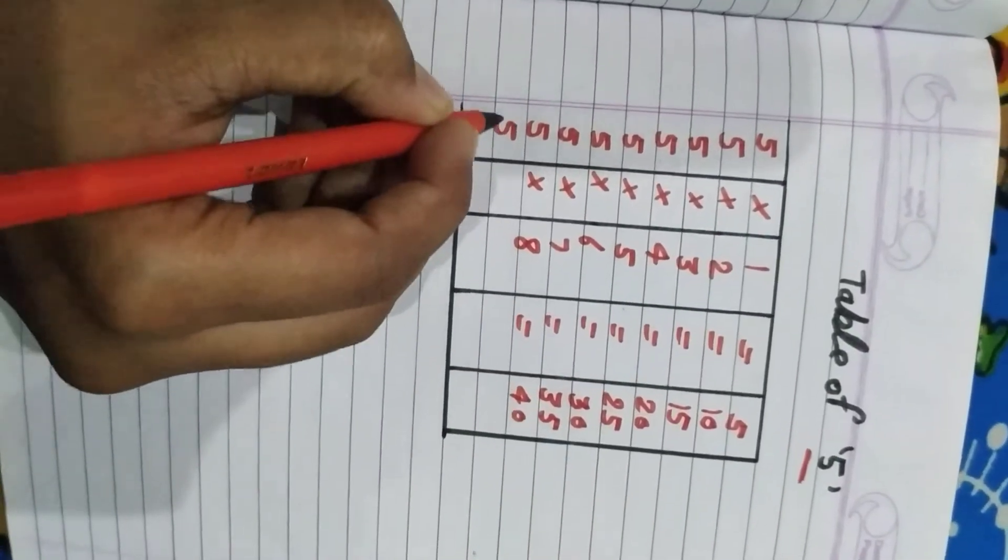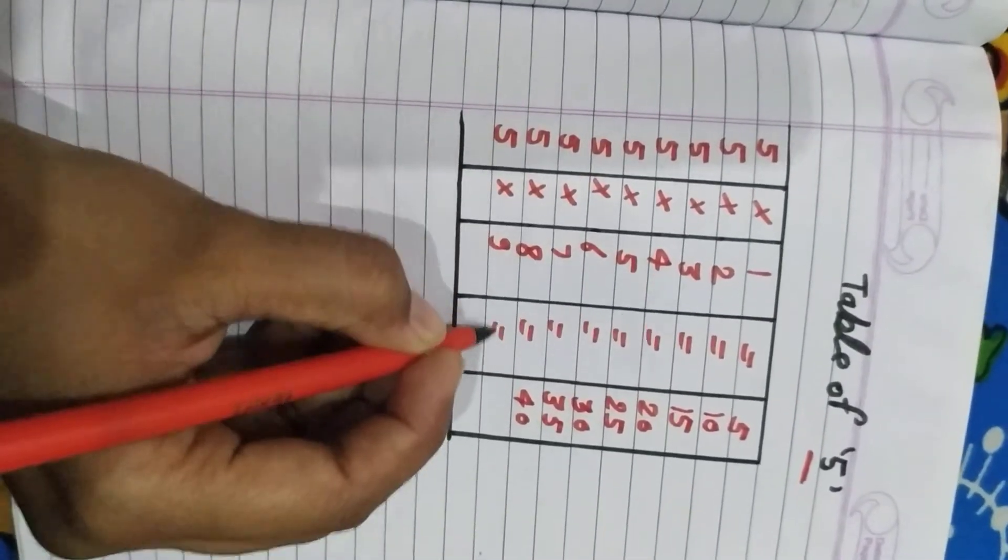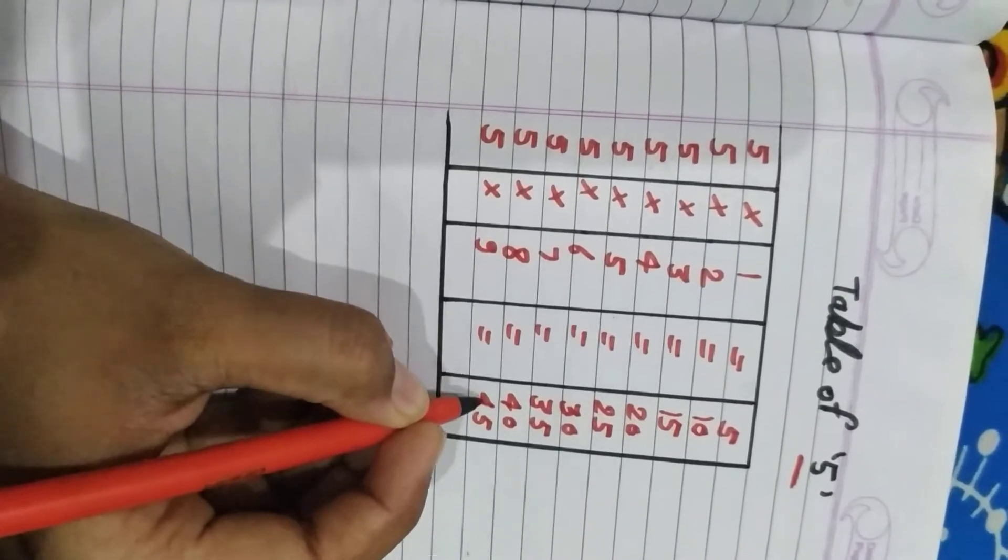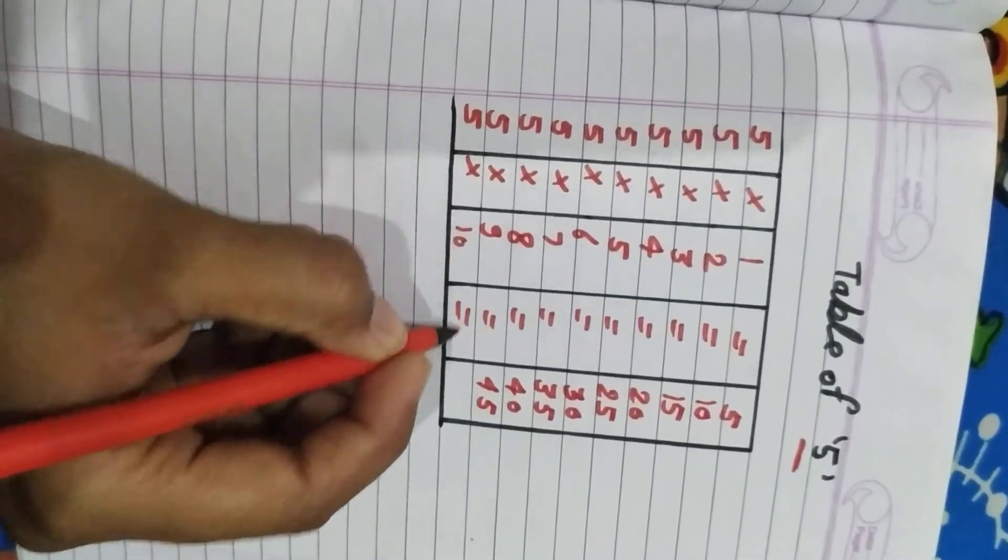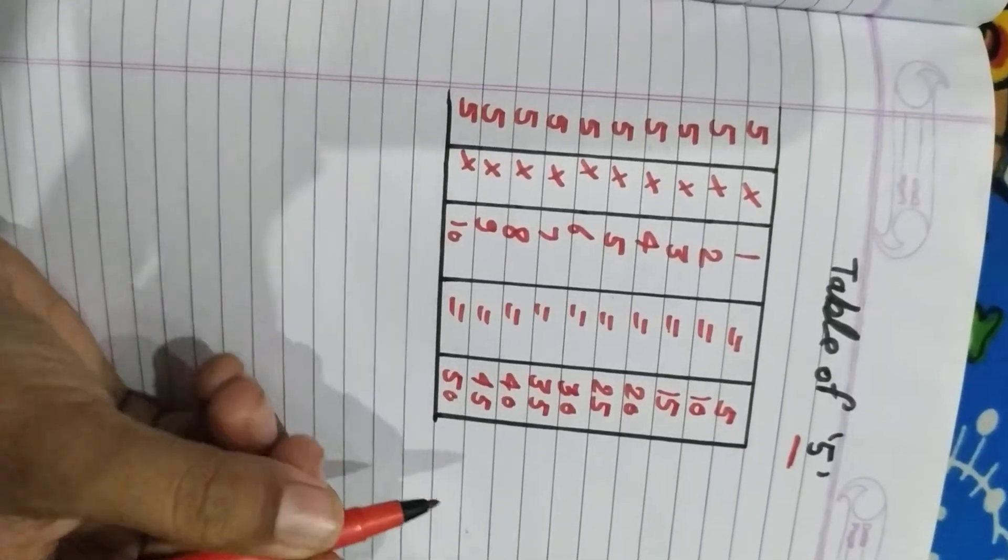Five nine ja forty five. And five ten ja fifty. We will repeat one more time. Okay. Start with me.